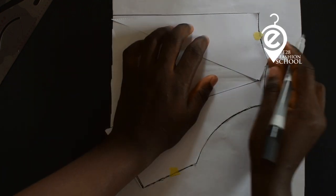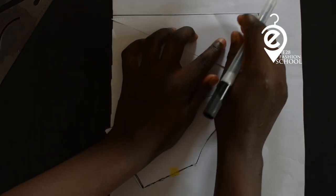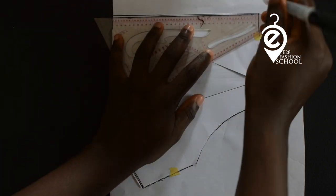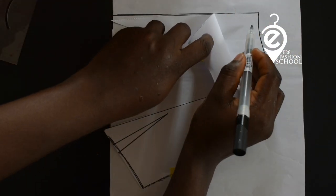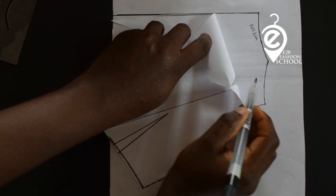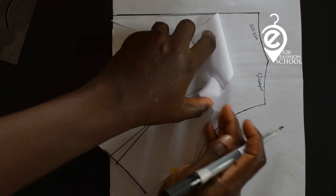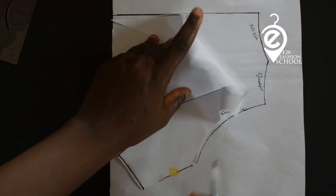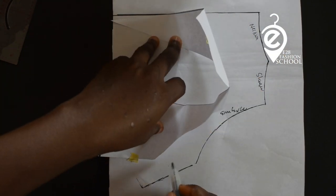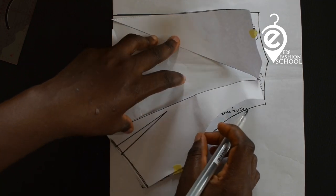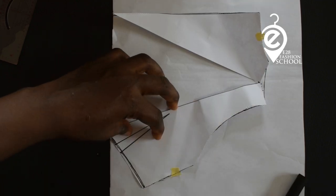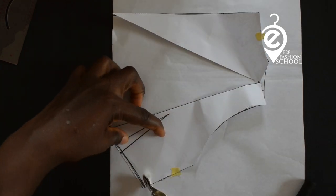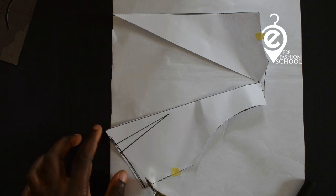Now it is very important that you note each part of your pattern because it's going to be so confusing at the end of the day if you don't do this. Mark every point: the armhole, the shoulder, the center back, everything.